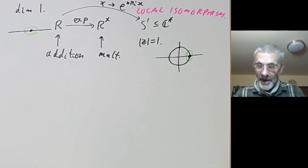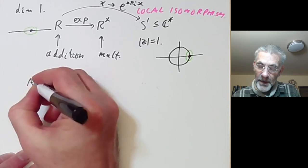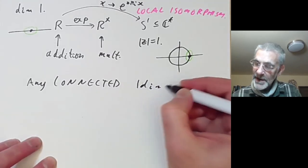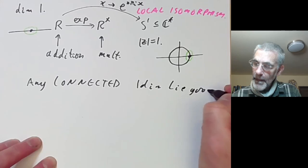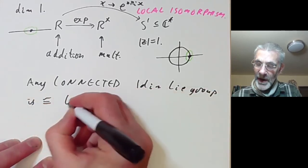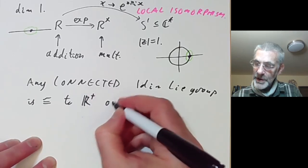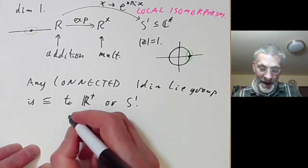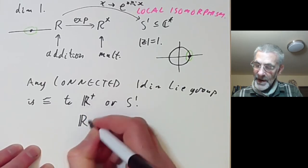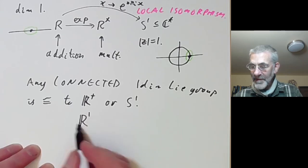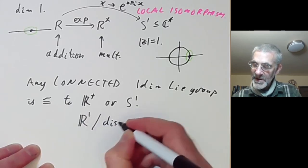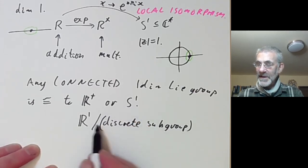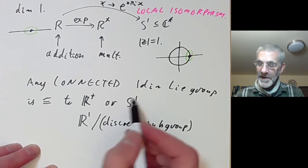In fact, any connected one-dimensional Lie Group is isomorphic to either the reals under addition or to the circle group S¹. Another way of saying this is that any one-dimensional Lie Group is obtained by taking the one-dimensional vector space and quotienting out by some discrete subgroup — the discrete subgroup is zero in the case of the reals, and Z in the case of S¹.